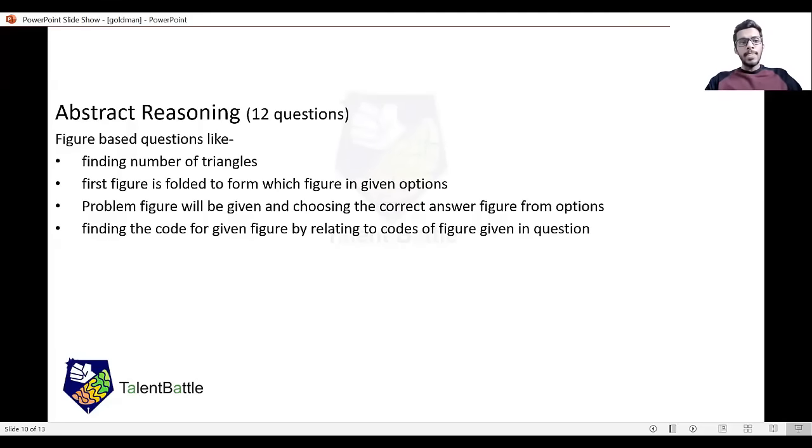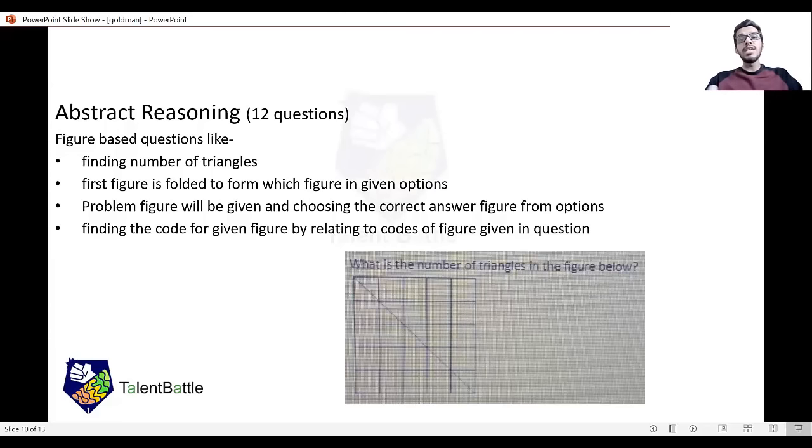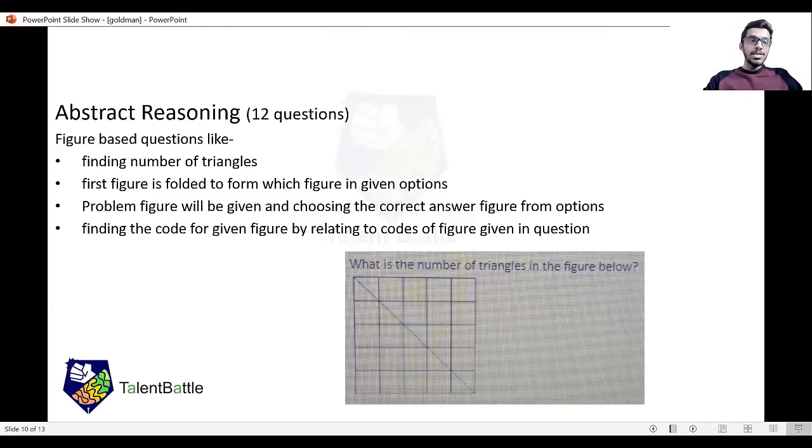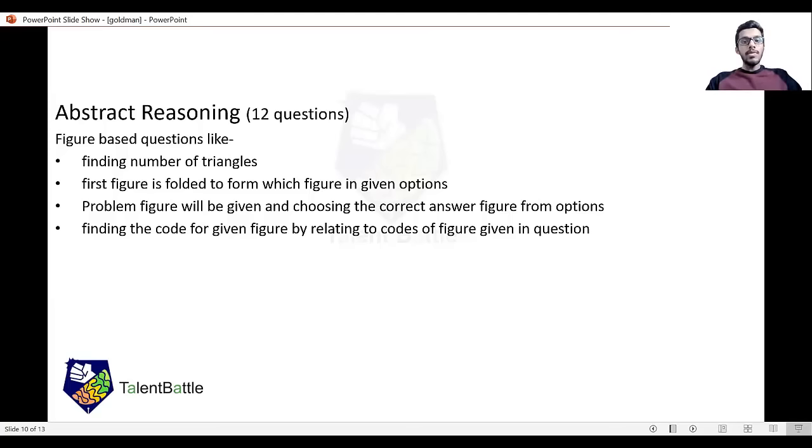Next was abstract reasoning with 12 questions. In this section, question types were like finding the number of triangles in a given figure. Then there were questions where the first figure is folded to form which figure given in the options. They will give the lines where we need to fold and then we need to answer which figure will be formed after folding from the given options.